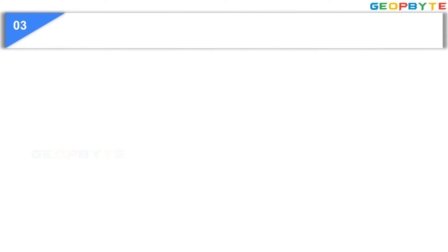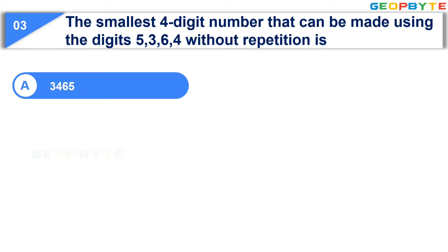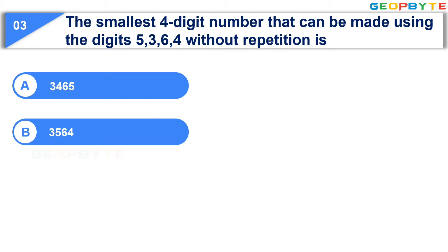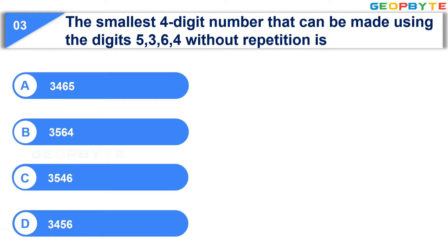Moving to the next question. The smallest 4-digit number using digits 3, 4, 5, 6 without repetition — Option A: 3,465, Option B: 3,564, Option C: 3,546, Option D: 3,456. Your time starts now.